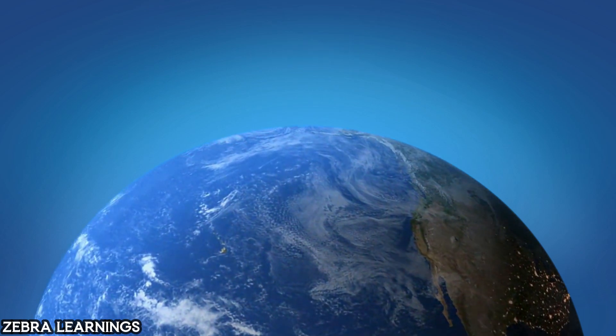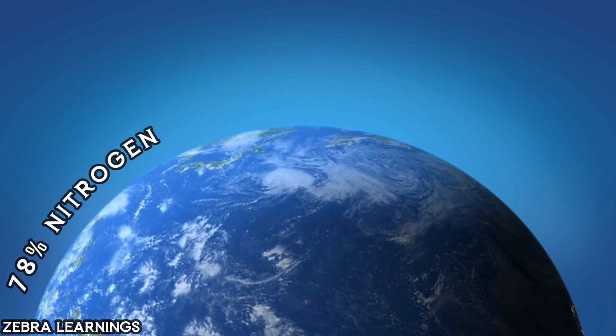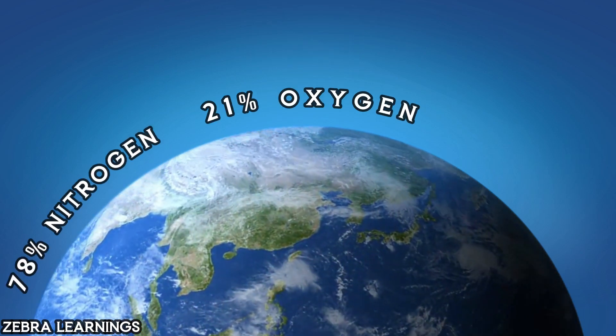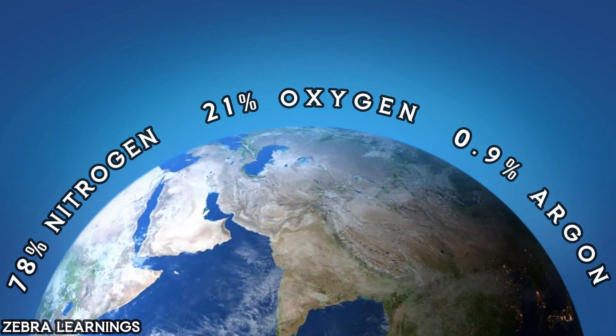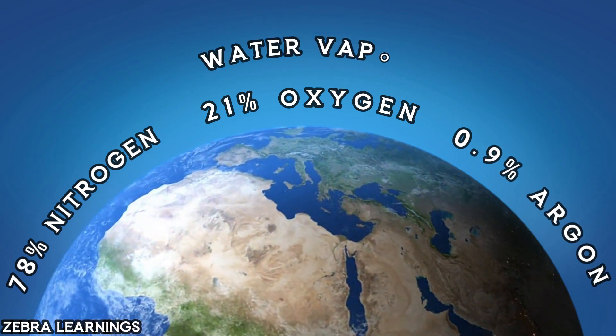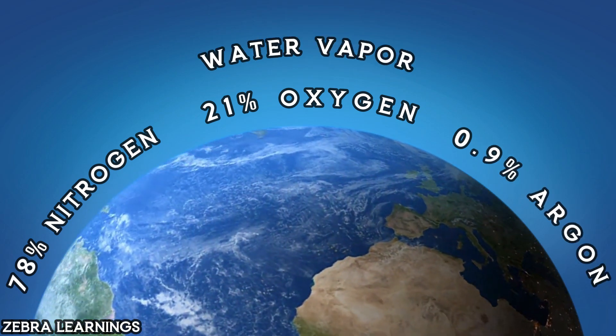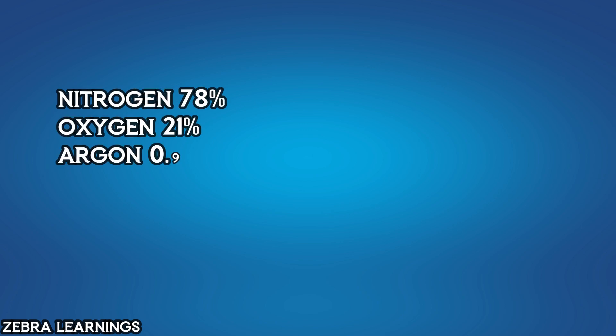Our atmosphere is a mixture of 78% nitrogen, 21% oxygen, 0.9% argon, and a small amount of water vapor. The amounts of nitrogen, oxygen, and argon remain constant, and their values do not change.